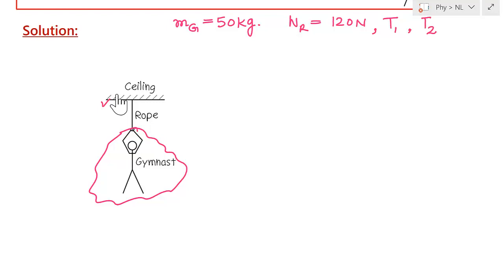Let us draw a free body diagram for the gymnast and the rope, and try to find variables T1 and T2. Since we have two unknown variables, T1 and T2, if we take two free body diagrams and write two independent equations, we can solve this problem.